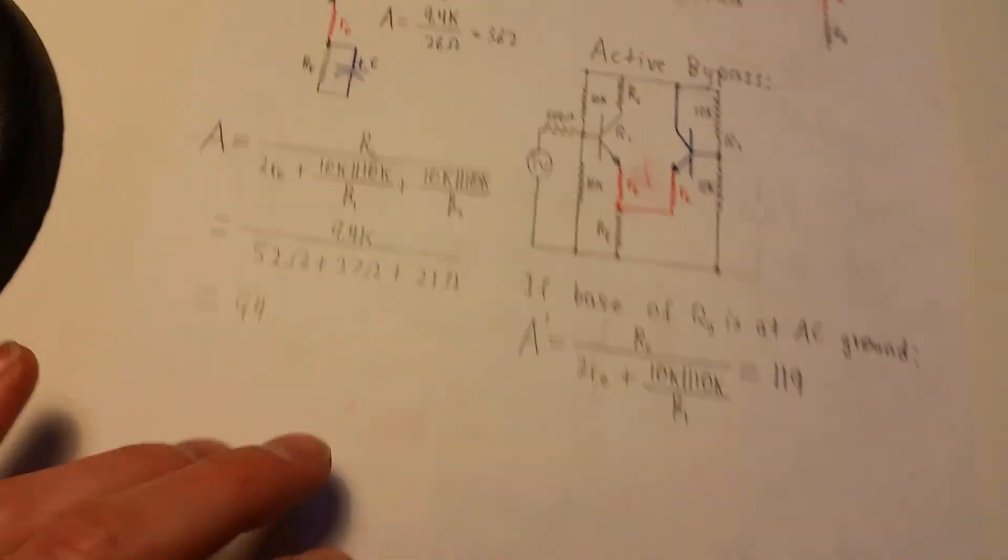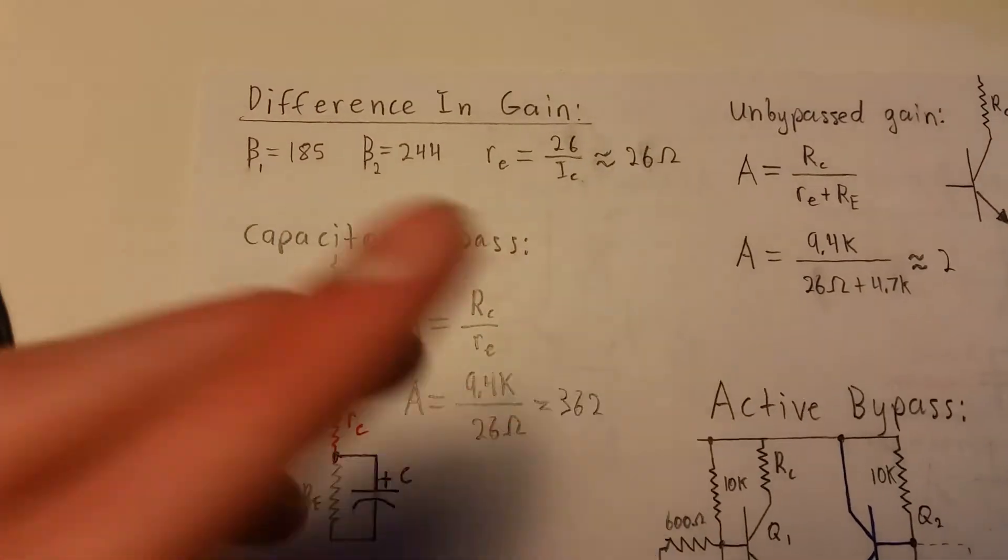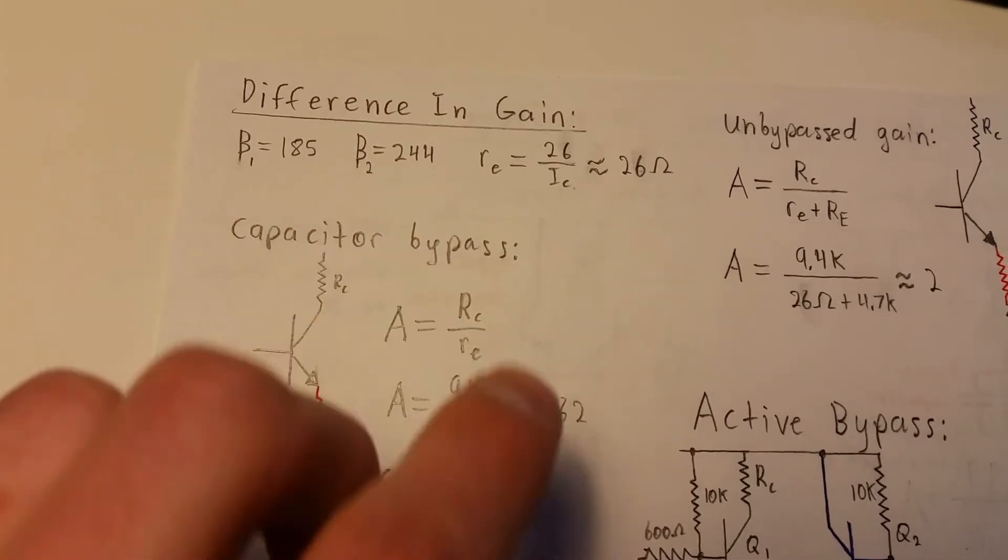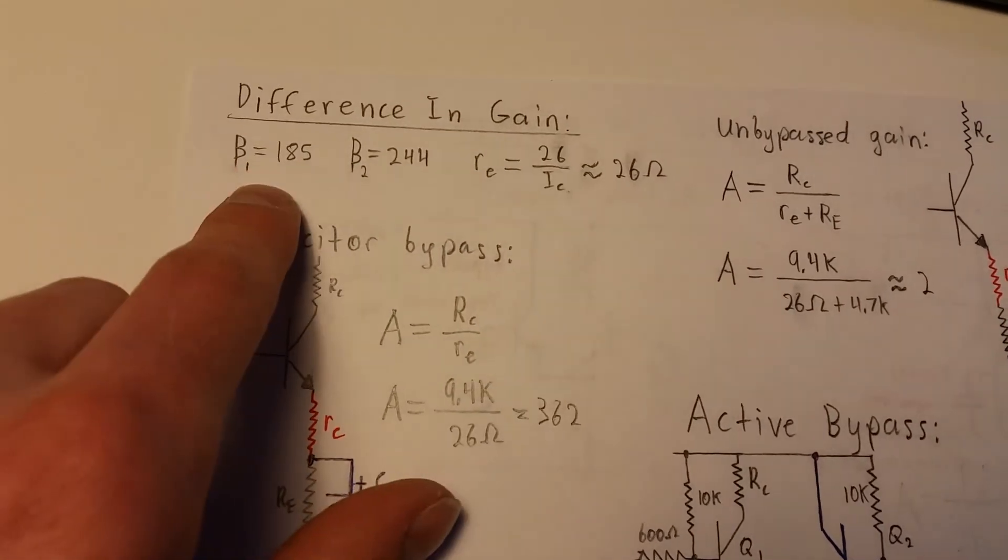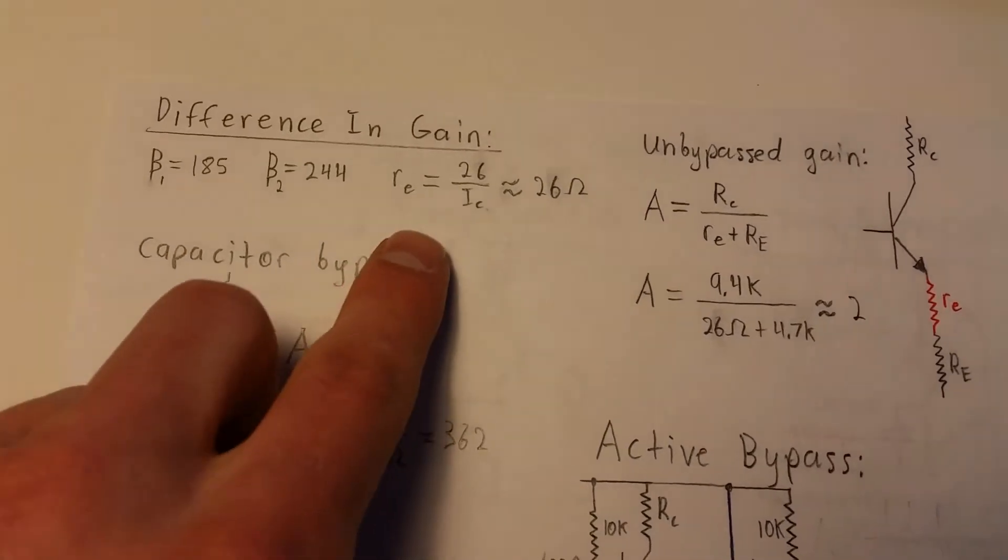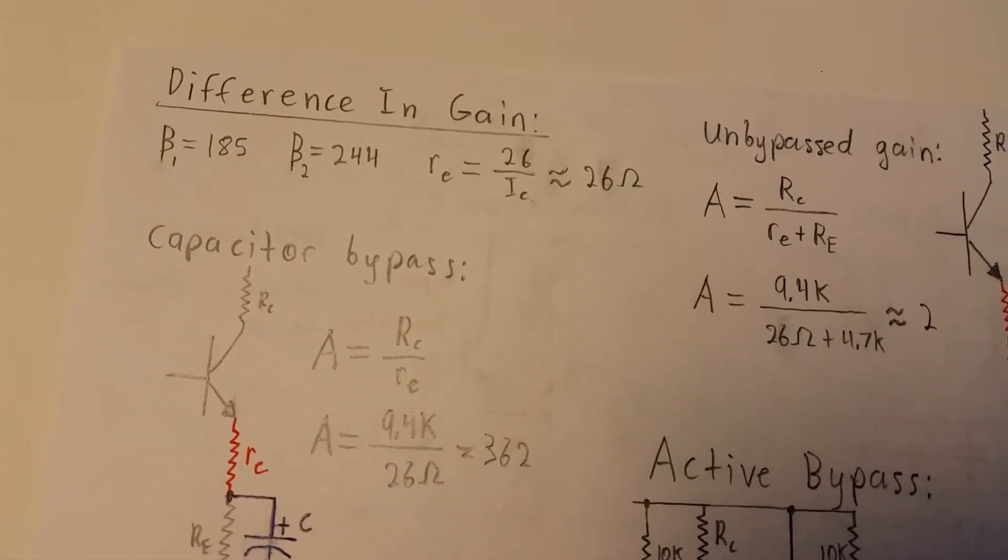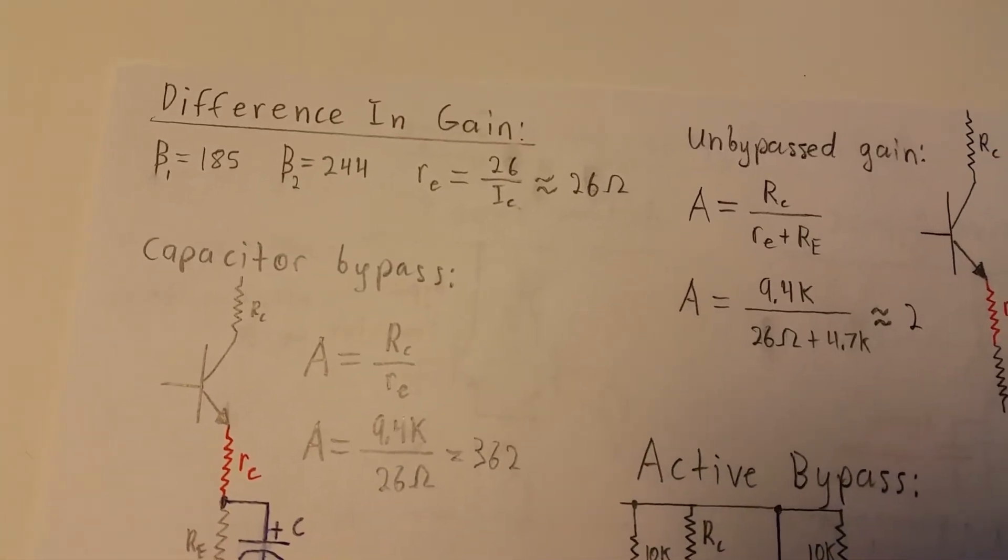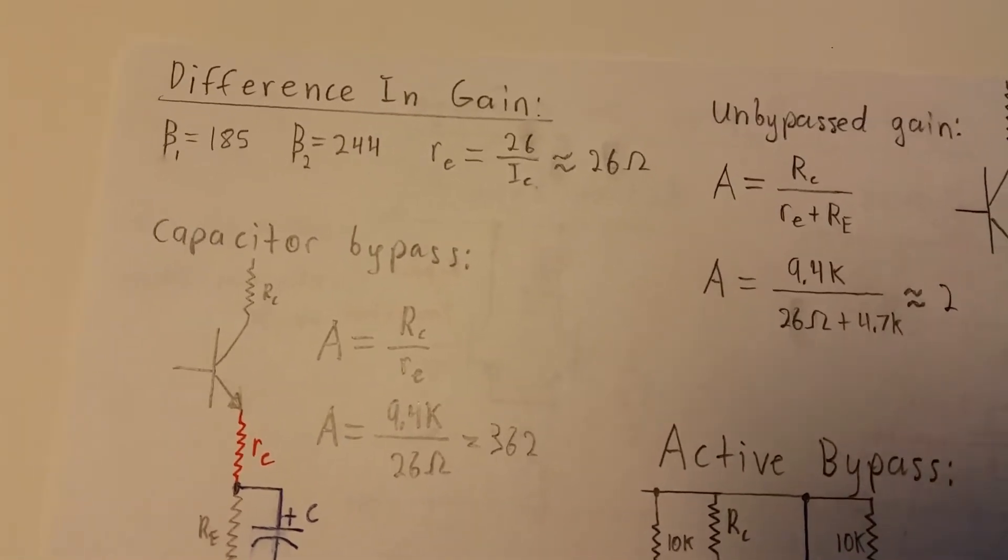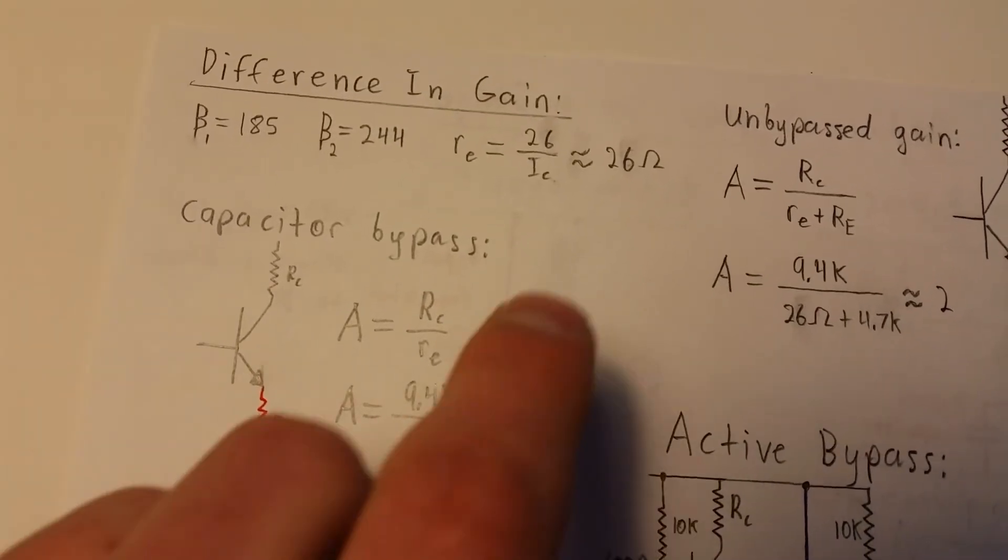There is a bit of difference in the gain. I built the circuit physically and I measured the betas of the two transistors, beta 1 being the amplification stage, beta 2 being the bypass. rE, the intrinsic emitter resistance is about 26 ohms at room temperature. And of course, that varies widely depending on the temperature. If you so much as breathe on it, this value could go up.